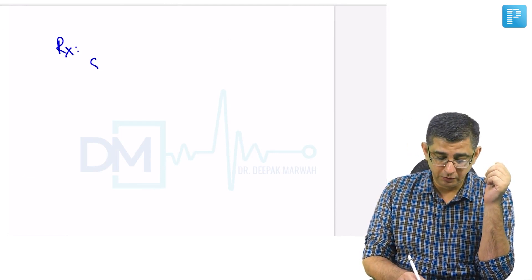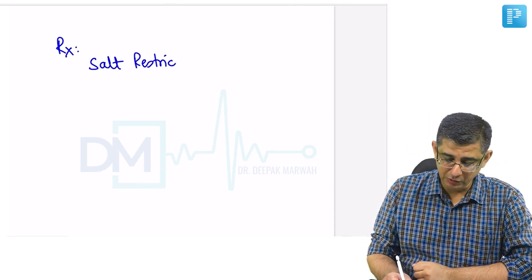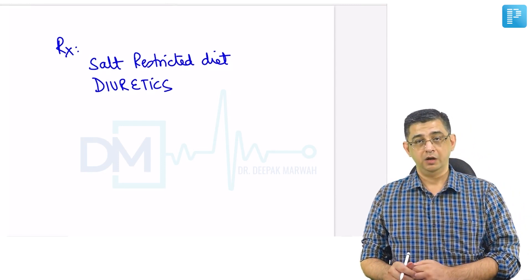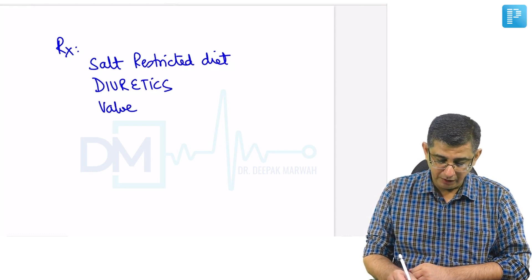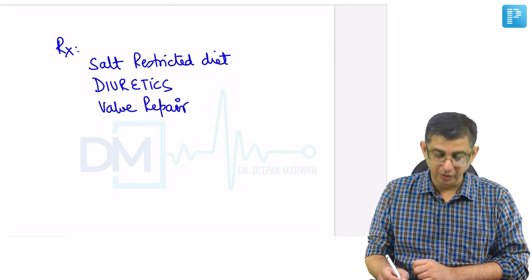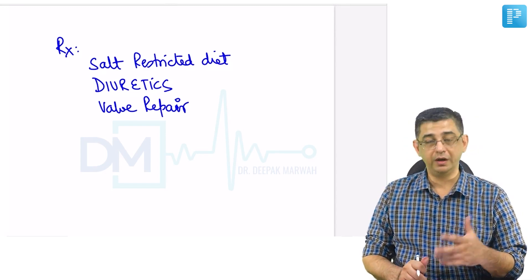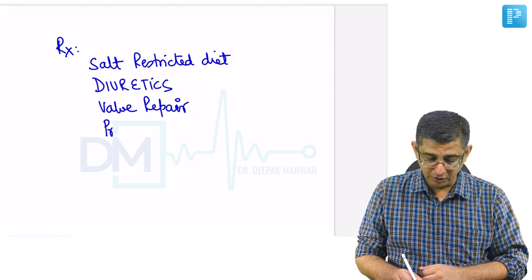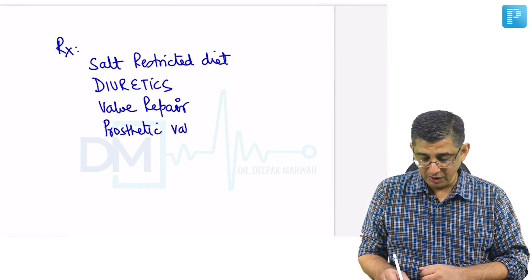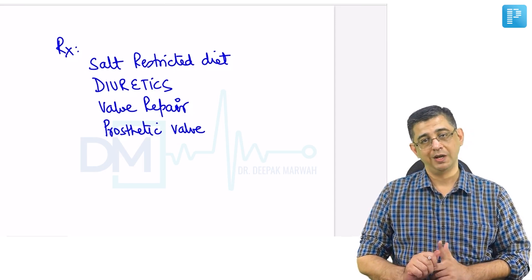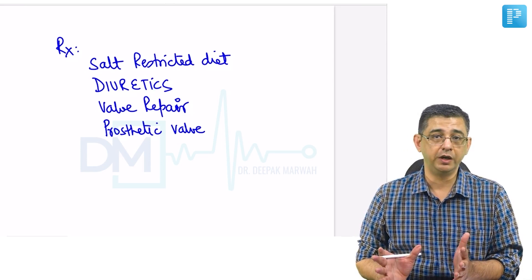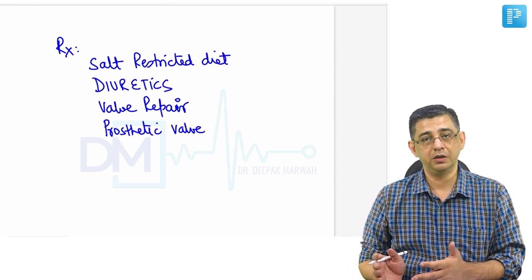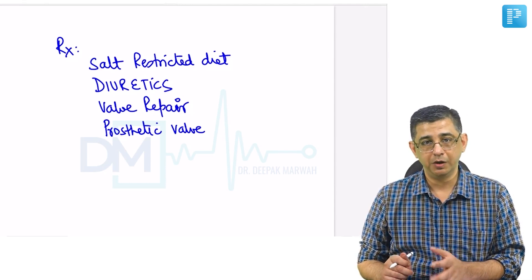For treatment, the foremost step is a salt-restricted diet since these patients have ascites, and the second important role is diuretics, specifically aldosterone antagonists. The main treatment is valve repair, which ideally should have occurred at the time of mitral valve repair — if there was a balloon dilatation for the mitral valve, the tricuspid valve should have been handled simultaneously. If valve repair is not possible, a prosthetic valve may be required, either a biological valve or a metallic device. The disadvantage of a metallic device is that it requires lifelong anticoagulation.